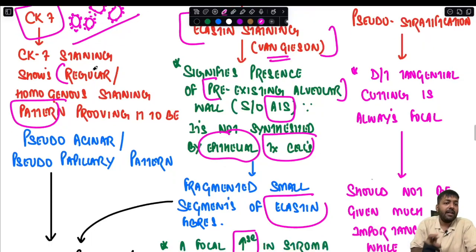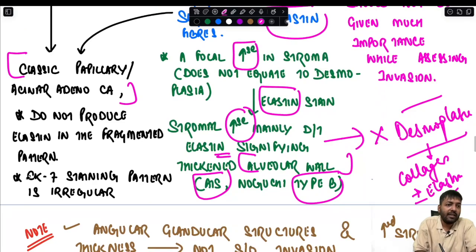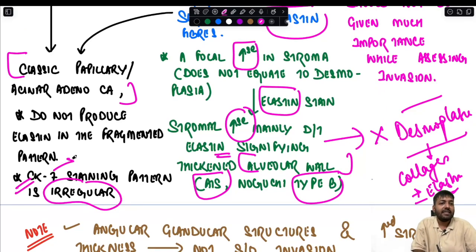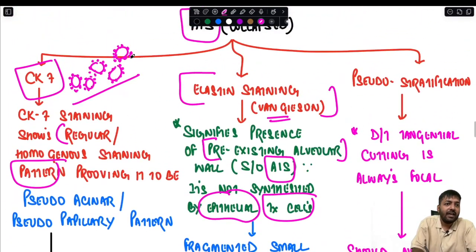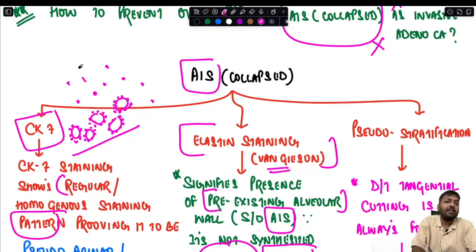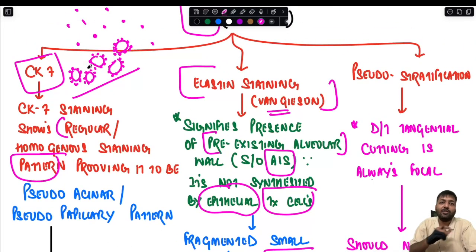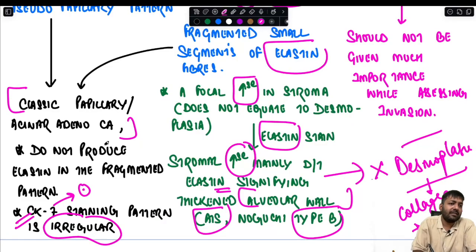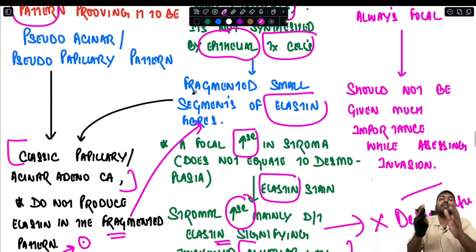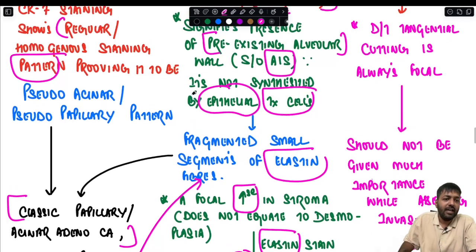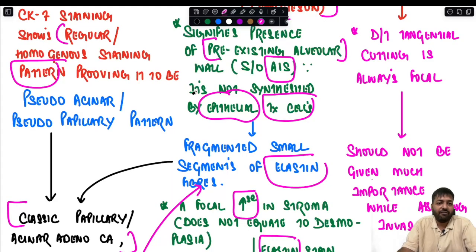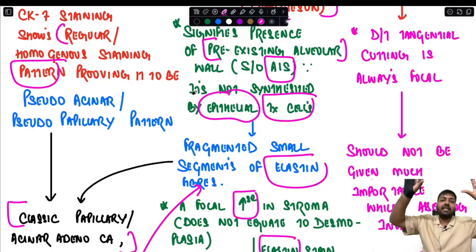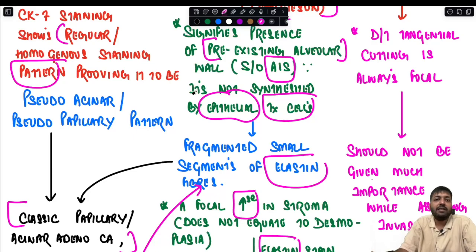In contrast, in invasive adenocarcinoma — such as classic, papillary, or acinar type — the CK7 staining pattern is very irregular. CK7 highlights scattered tumor cells that have invaded the stroma, with distorted alveolar walls, so the regular lining pattern is lost. Similarly, in invasive cases, you will not see the fragmented elastin pattern along alveolar walls, because the invading tumor cells do not produce elastin — there is no elastin visible around the invaded areas.